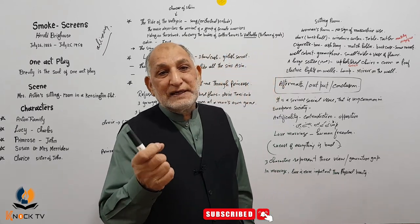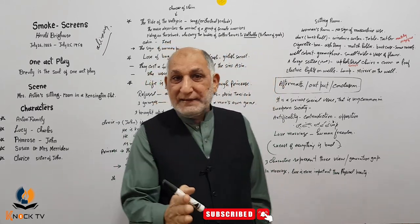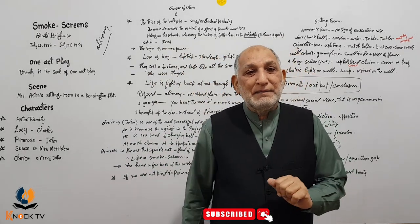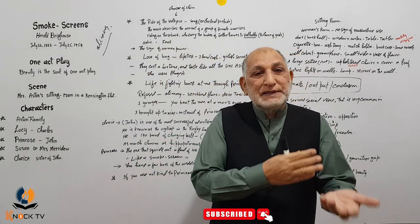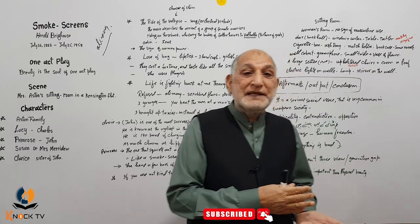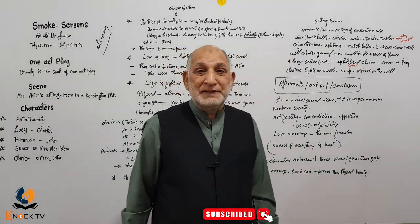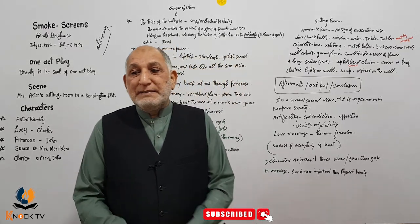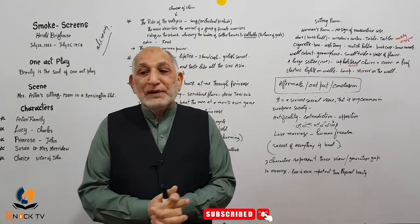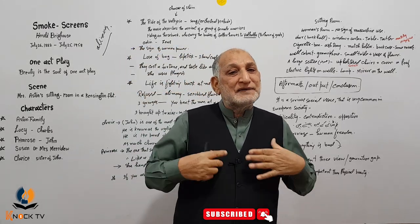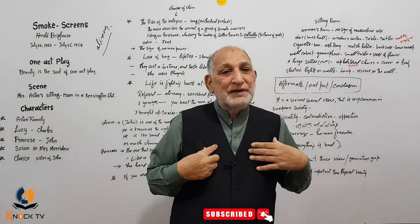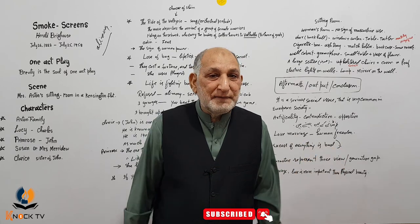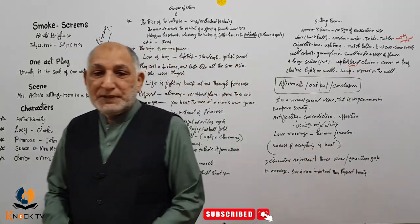Primrose نے اپنی ماں سے کہا: آپ نے خوبصورت آدمی سے شادی کی وہ آپ کو چھوڑ گیا، میں نے اس کا opposite کیا ہے — میں ایک بدصورت آدمی سے شادی کر رہی ہوں۔ اس کے ساتھ یہ one-act play ختم ہو جاتا ہے۔